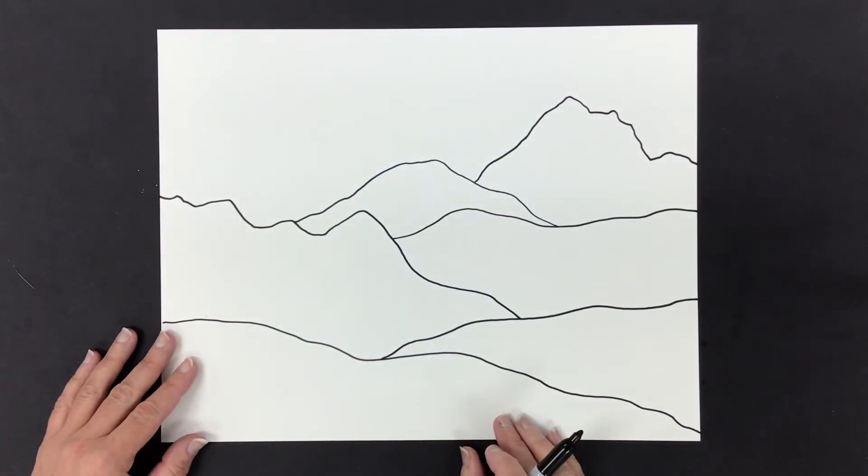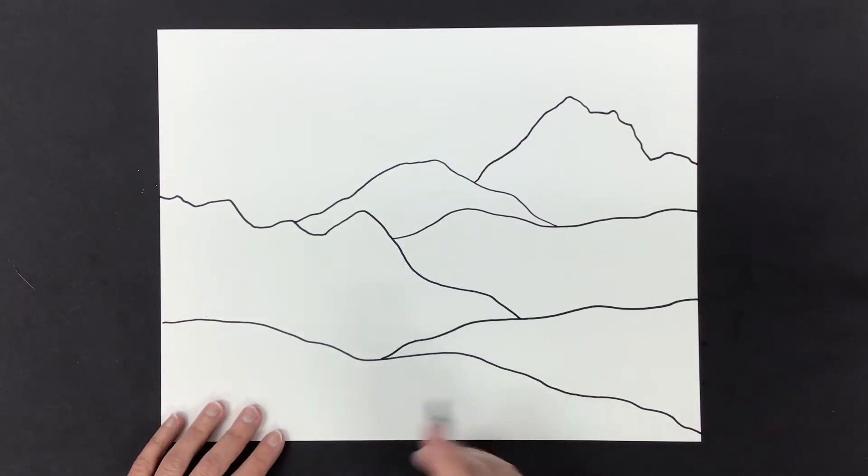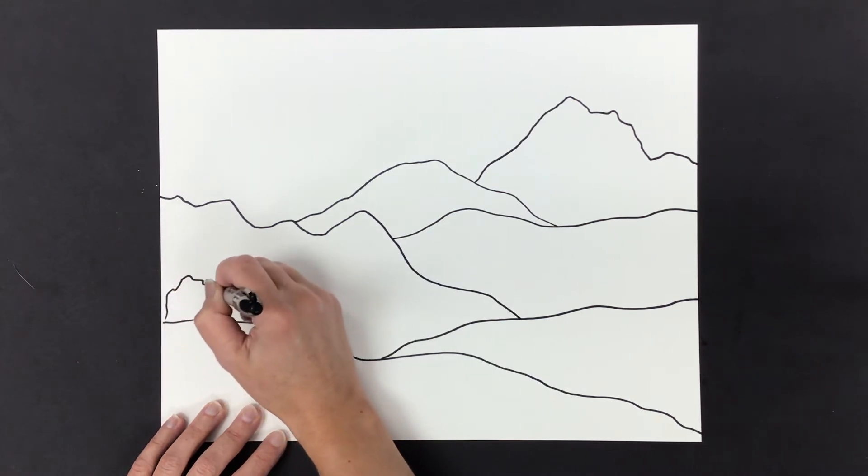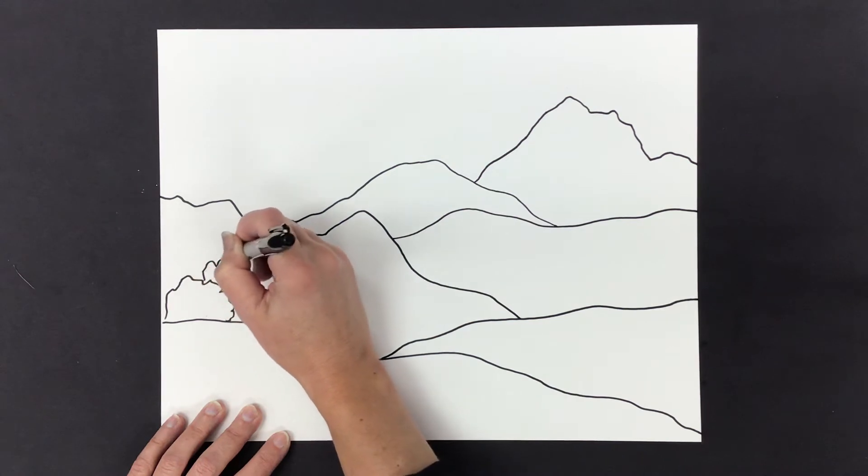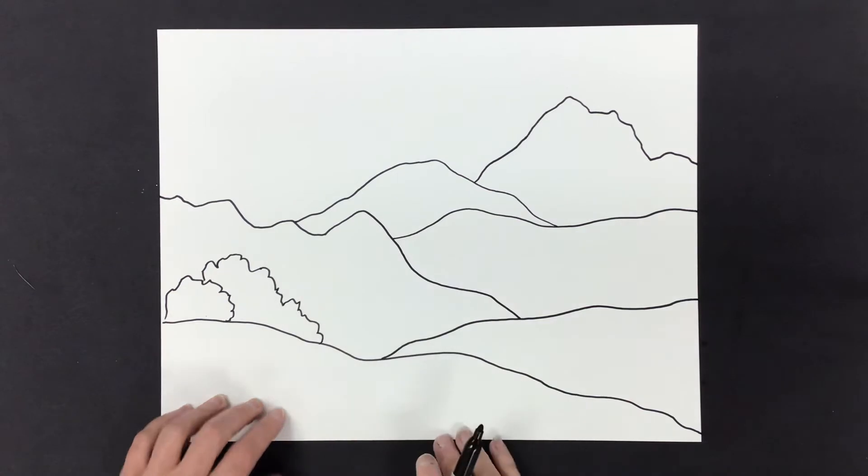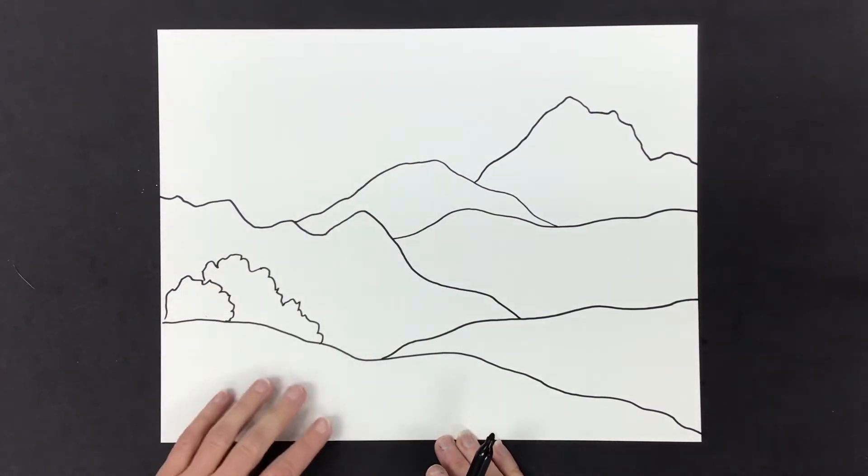But let's really add some great details to make it look more realistic. I'm going to add over here a couple little bushes. Because I'm close to these, I can see them. If these were way far away on this hill, I would not be able to see them.